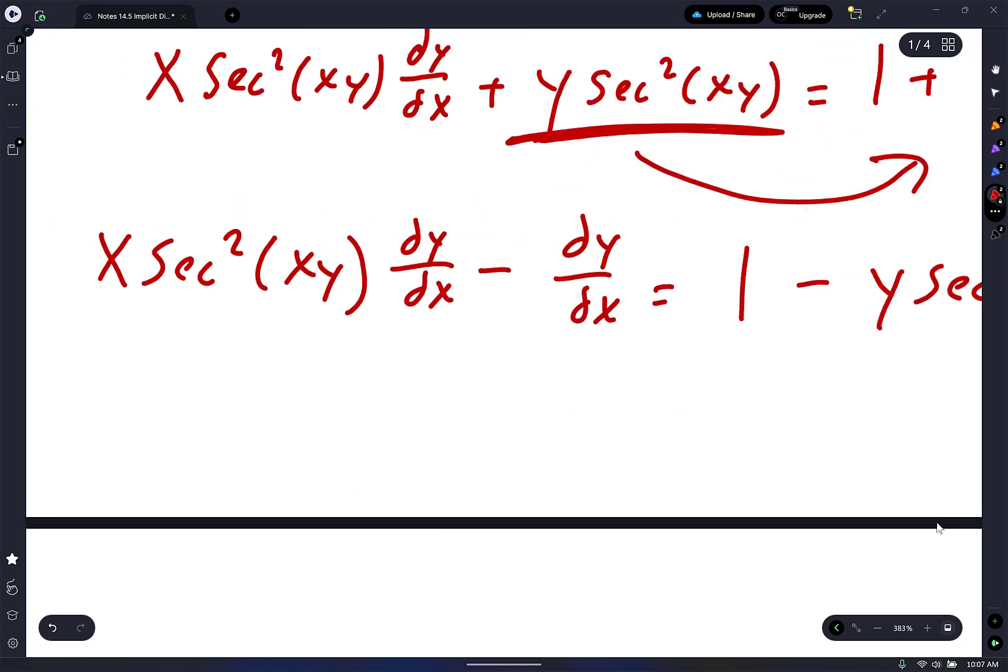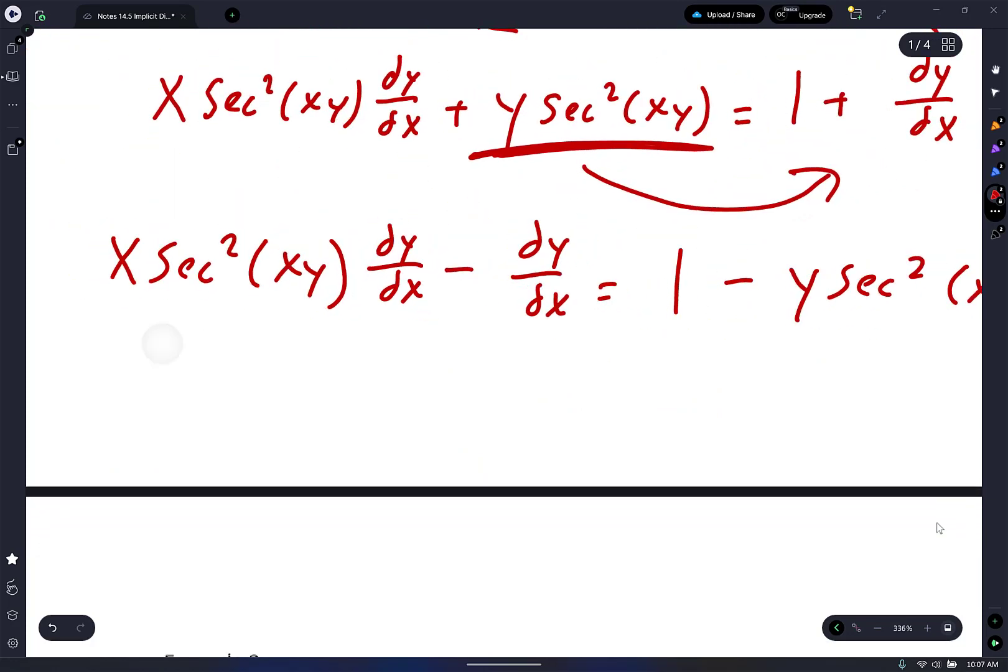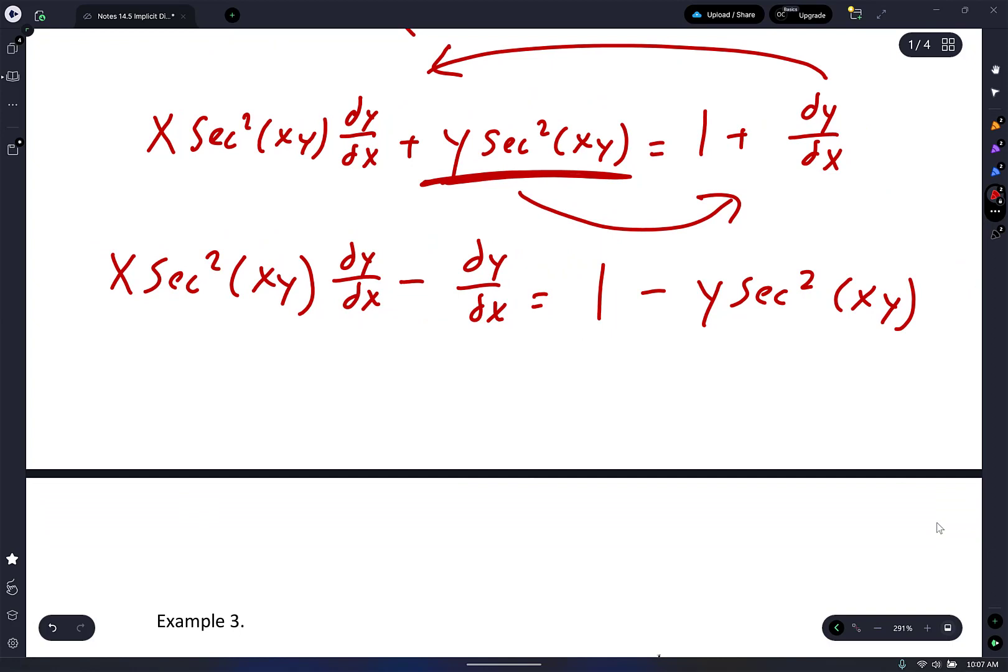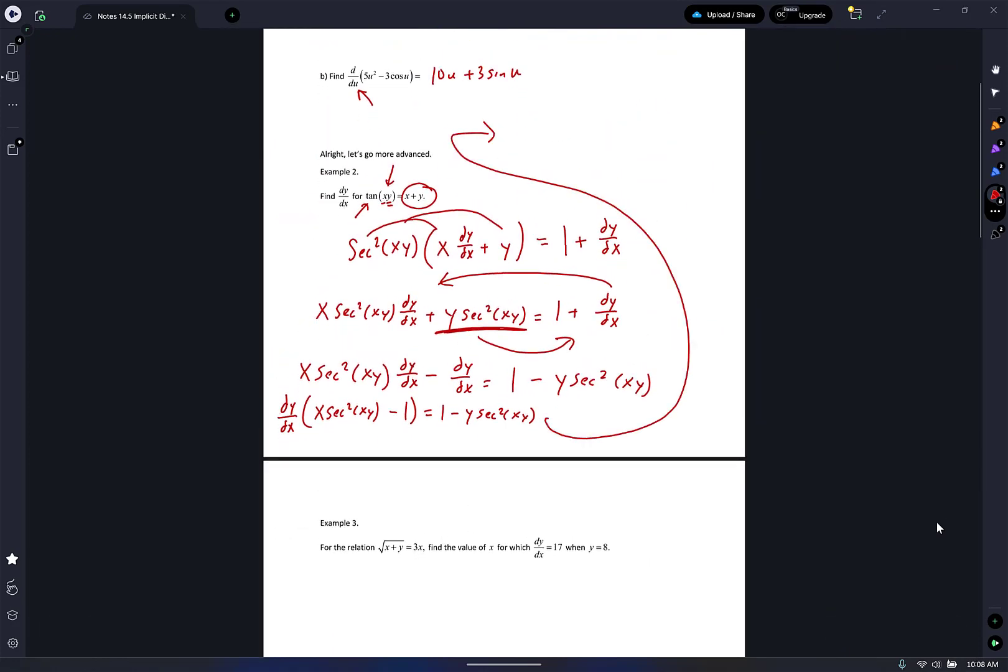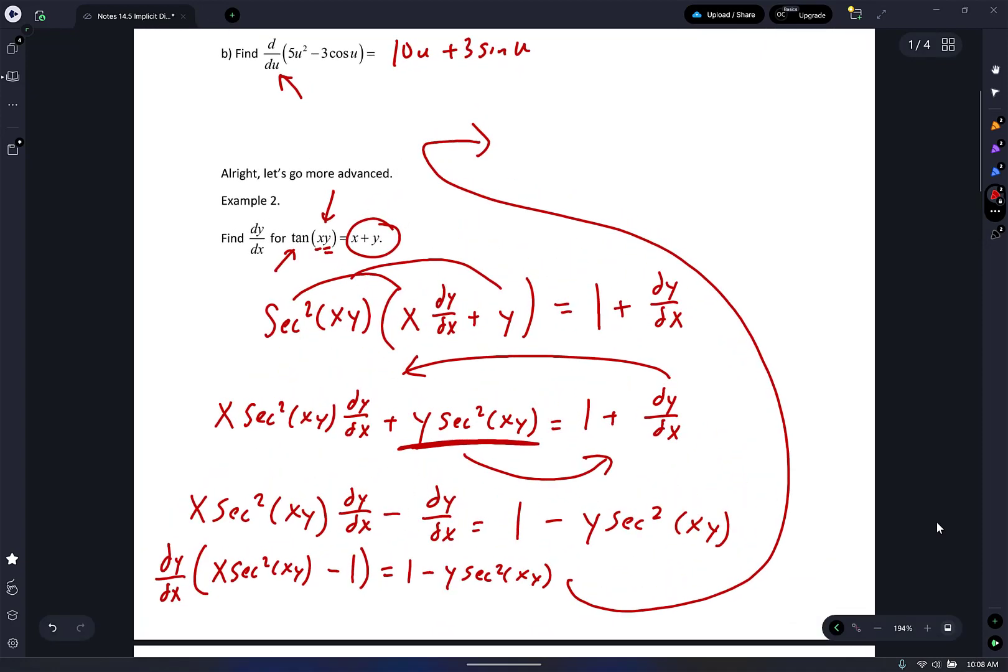From there, I'm going to factor out what? dy/dx. So I have dy/dx times (x secant² xy minus 1). If you can do it in one step, go for it. Don't forget that minus 1. Equals 1 minus y secant² xy. Finally, we divide.